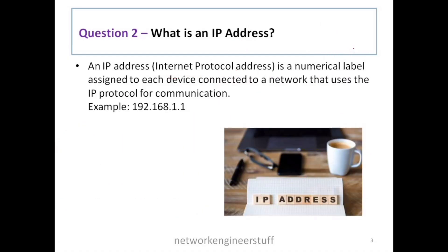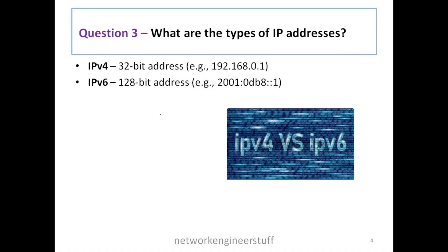Question number two: what is an IP address? An IP address is a numerical label assigned to each device connected to the network that uses IP protocol — that is, Internet Protocol — for communication. For example, it looks like 192.168.1.1. Your mobile phone or laptop connected to the internet will have some IP address assigned to it.